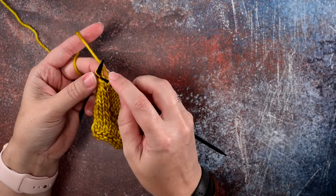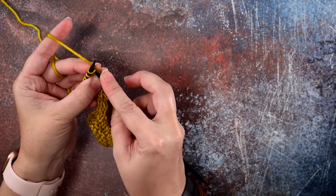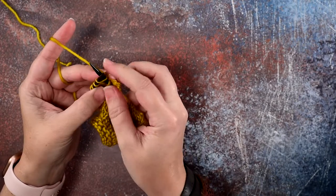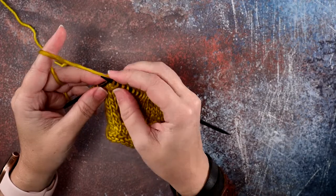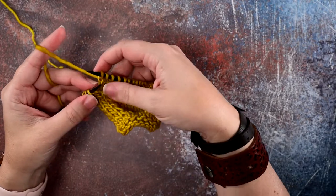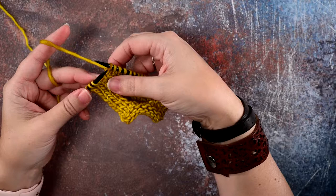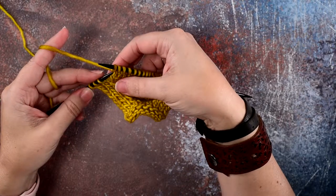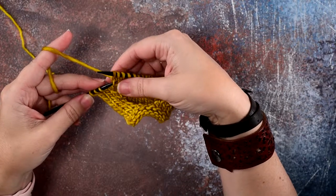Then we're going to knit into the front bar, knit that stitch and remove it from our needle. And now we're going to insert our left hand needle through the stitch one row back.